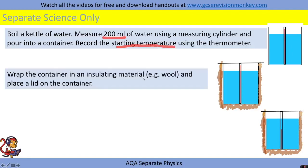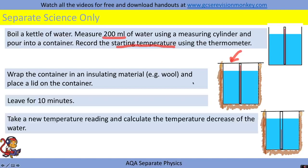Wrap the container in an insulating material, for example wool, and place a lid on top of the container. Leave it for a set amount of time, for example 10 minutes, then take a new temperature reading and calculate the temperature decrease of the water.